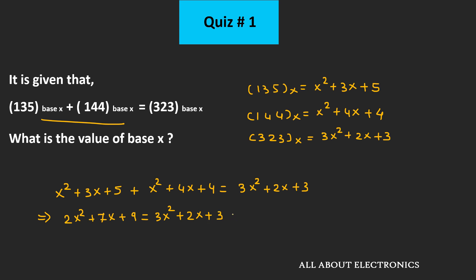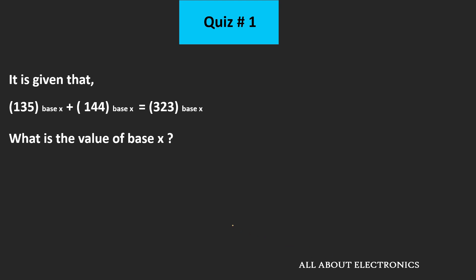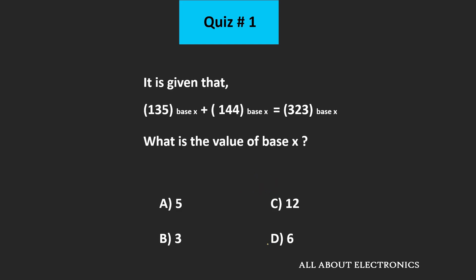And if we further simplify it, then we can say that x² minus 5x minus 6 is equal to 0. That is equal to (x minus 6)(x plus 1) equals 0. That means the value of x could be either 6 or minus 1. Now, we know that the value of x cannot be negative, so the value of x should be equal to 6. That means for the given quiz, the answer is D.